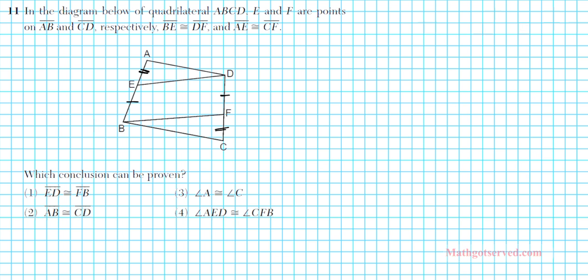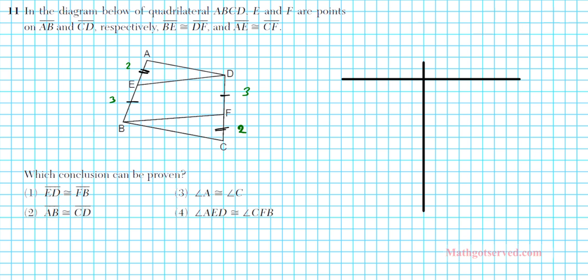Let me give you an example. If this were 3 and 2, that would mean CF is 2 and DF is 3, and then both sides will be 5. Let me show you the proof that the answer is actually option 2. You don't have to write the proof, but I just want you to practice. So: statements and reasons.